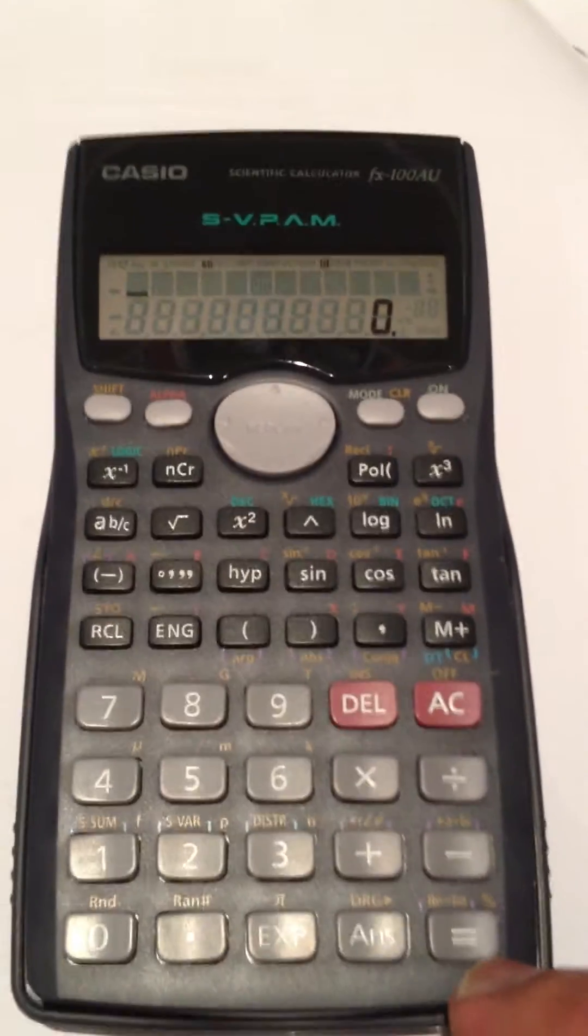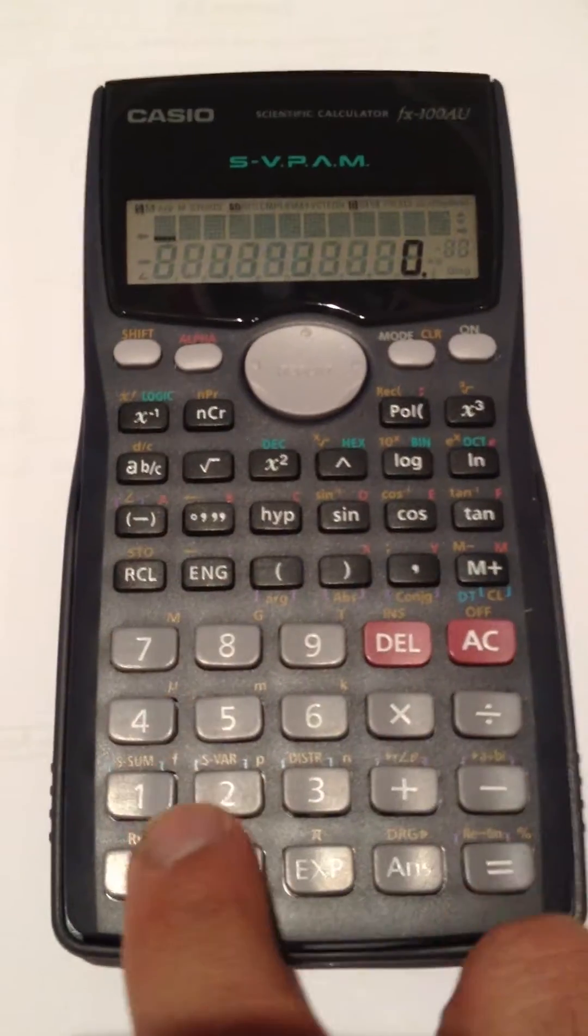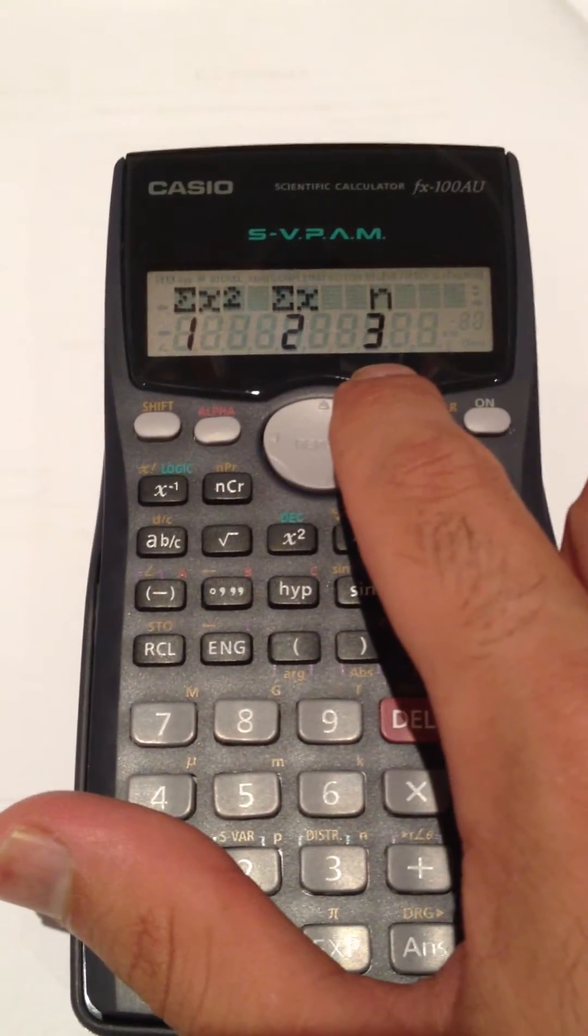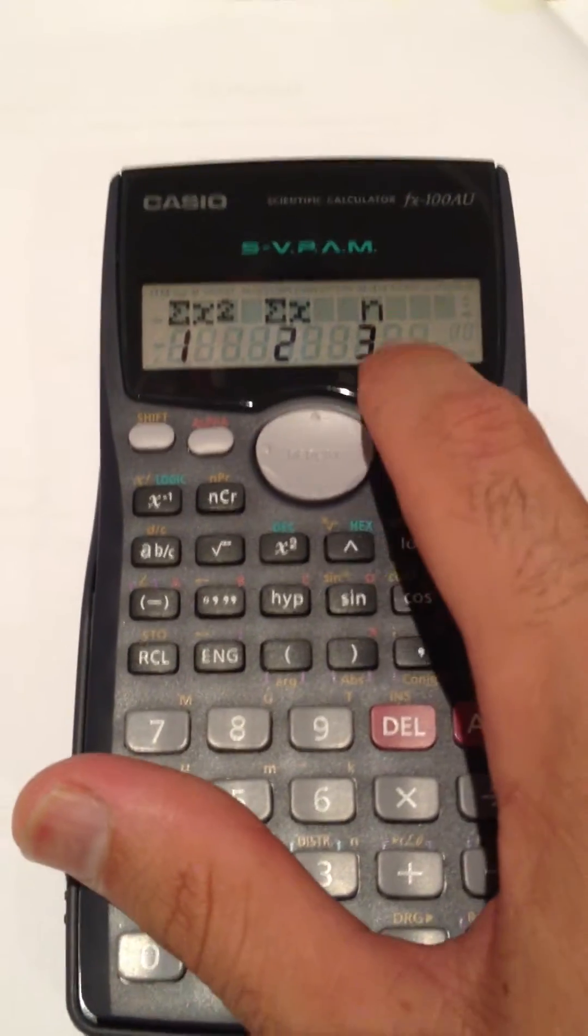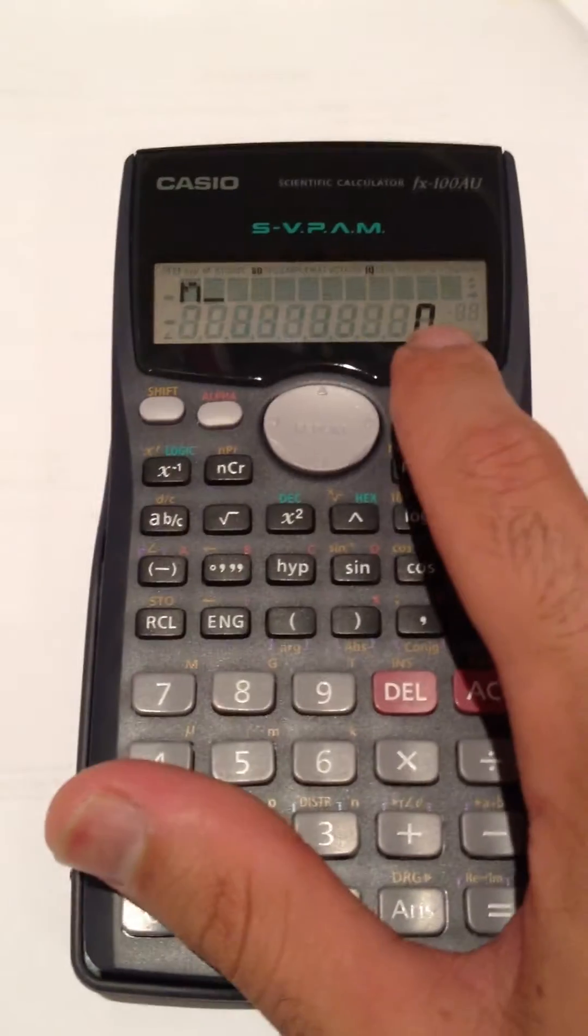From the statistics mode, you can press shift one, and you can see the population, or how many data numbers you have put in. In this case, we haven't put anything, so n equals zero.